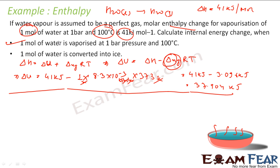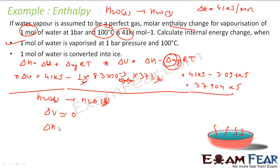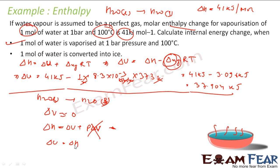The second question says one mole of water is converted to ice. Here water in liquid form becomes solid. The change in volume from liquid to solid is almost zero. So delta H equals delta U plus P·delta V — if delta V is zero, this term becomes zero, and delta H is almost equal to delta U. Therefore delta U is almost equal to delta H, which is 41 kilojoules per mole.